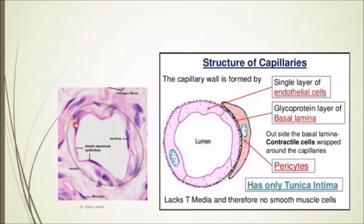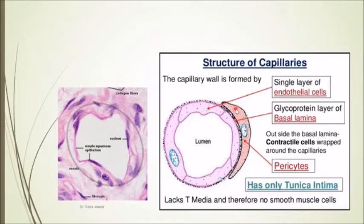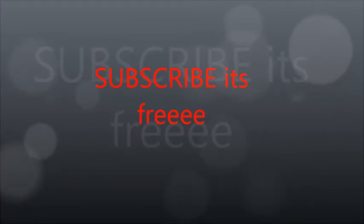Certain cells are attached to the capillary walls known as pericytes. Pericytes are visible at larger magnification or under the electron microscope. They are contractile cells that help in the contraction of capillaries since there is no smooth muscle layer present. They regulate blood flow and also help in phagocytosis.